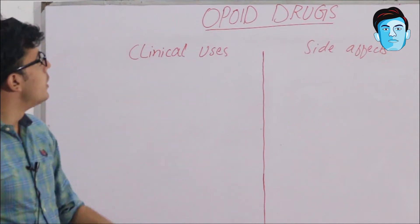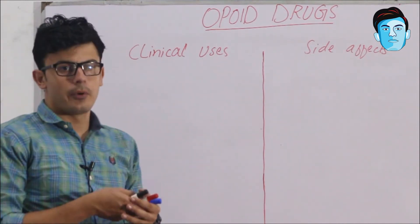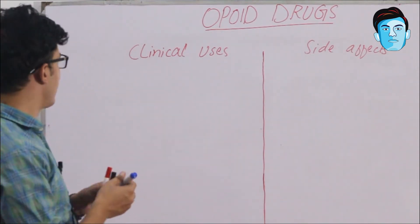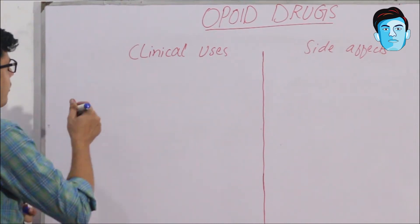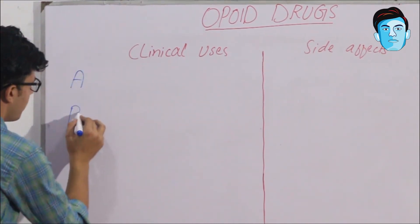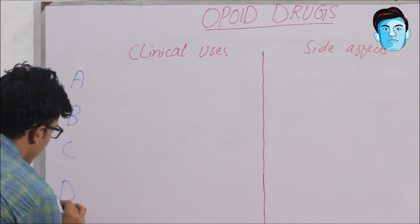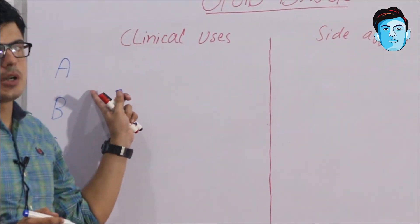Now let's talk about the clinical uses of opioid drugs at a single glance. For this we have a trick: ABCD, where every single alphabet will indicate one of the uses of opioid drugs.